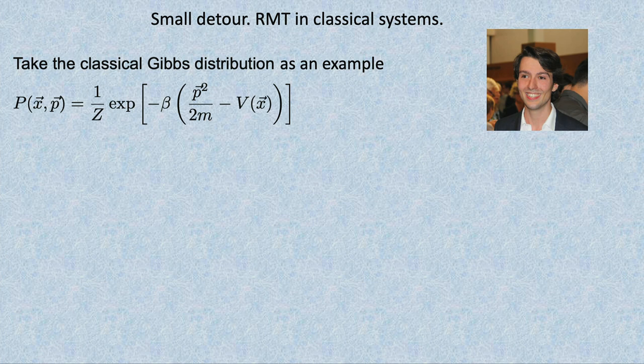Let's move on. As a disclaimer, I'll take a small detour. This is a fun project done with Peter Kleist, who is now on the Dresden faculty. I talked a little bit about eigenstates as a way to define quantum chaos, but let me say that Wigner-Dyson statistics and these conjectures equally apply to classical systems.